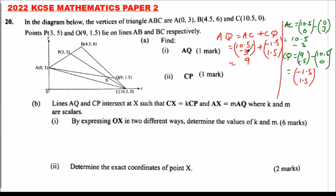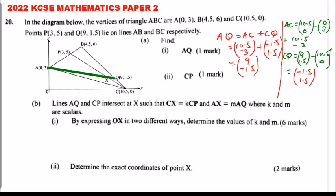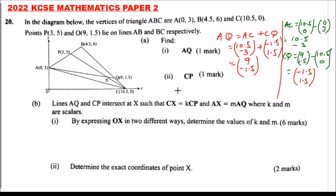So vector AQ = (9, -1.5). That's how you work with vectors, following one route from A to C then C to Q. Now we need to find vector CP. Point P is here and C is here.